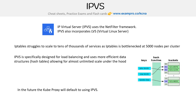In the future, kube-proxy will default to IPVS. I really wanted to get a nice diagram to show how it works, but I just couldn't find anything. The point is you're going to end up using it in the future, and it's used because of the limitations of IP tables. And that's really all you need to know.